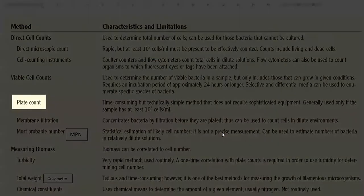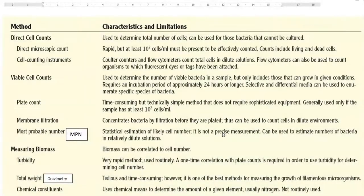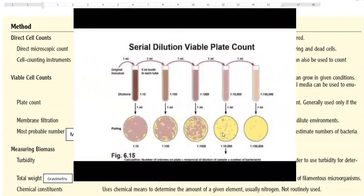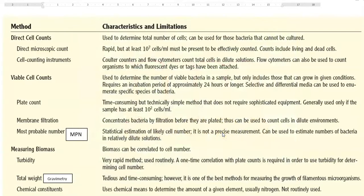The first one is plate count. It is a time consuming but technically simple method that does not require any sophisticated equipment. It requires only petri dishes as well as test tubes. Using test tubes, you will go for a serial dilution and the media containing petri dishes were used for plating. It is generally used when the sample found to have at least 10 to the power 2 cells per ml.